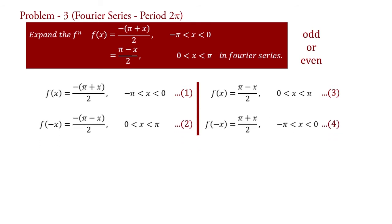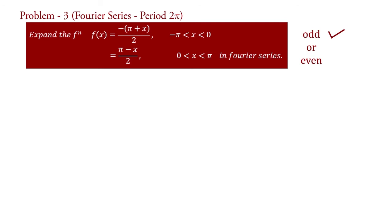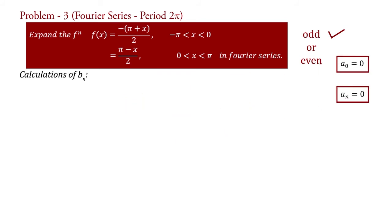From equations 1 and 4, we found that f(x) equal to minus f(minus x) in the interval minus pi to 0. And from equations 2 and 3, we also found that f(x) equal to minus f(minus x) in the interval 0 to pi. It means function f(x) is odd. We know that for any odd function, coefficients a_0 and a_n are 0. Therefore, we will calculate only b_n.